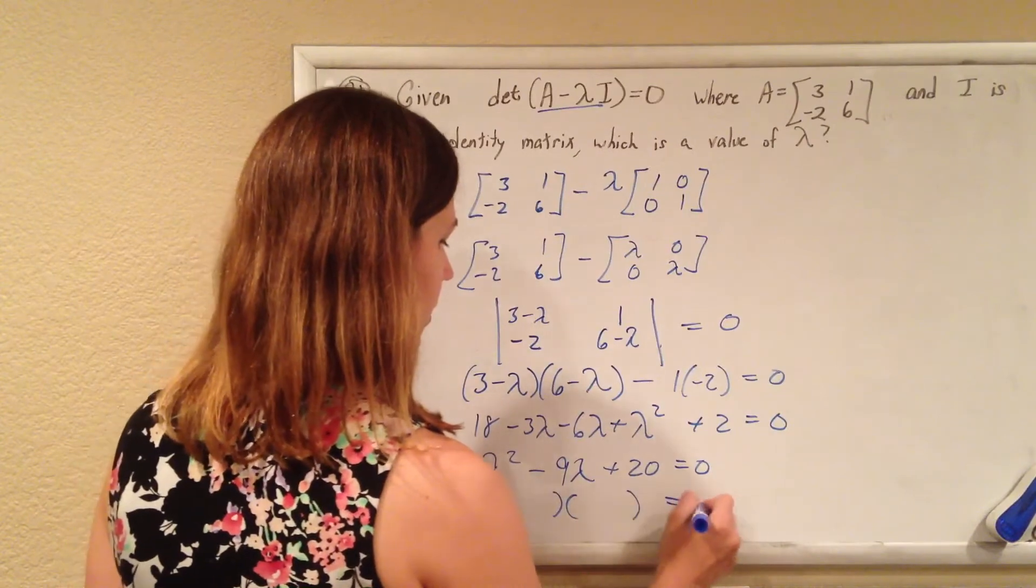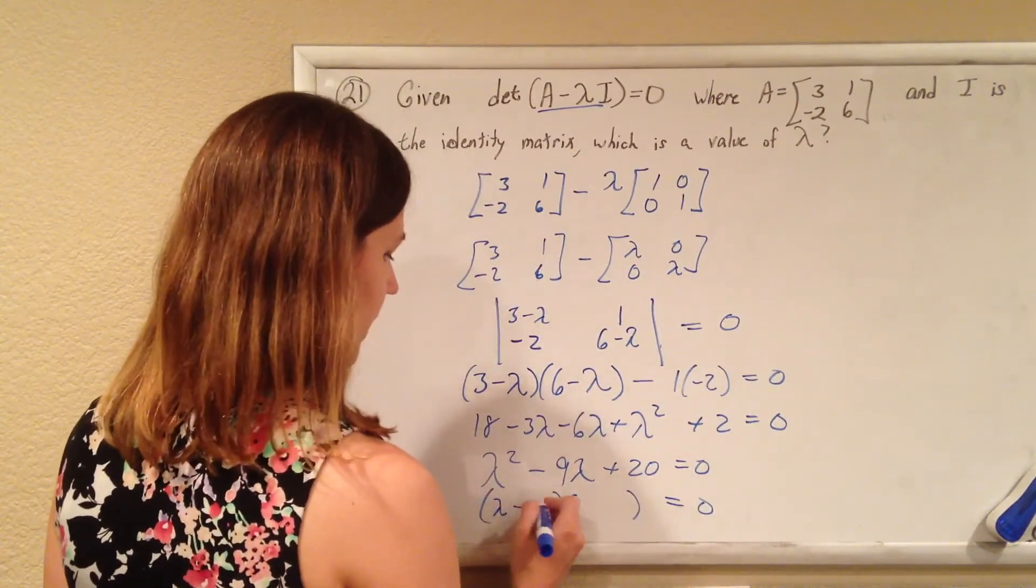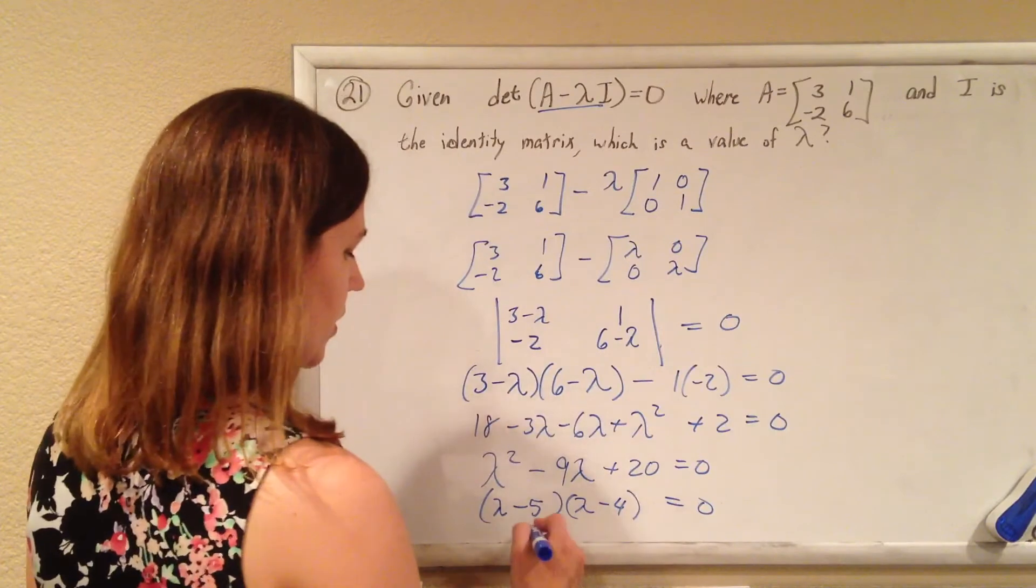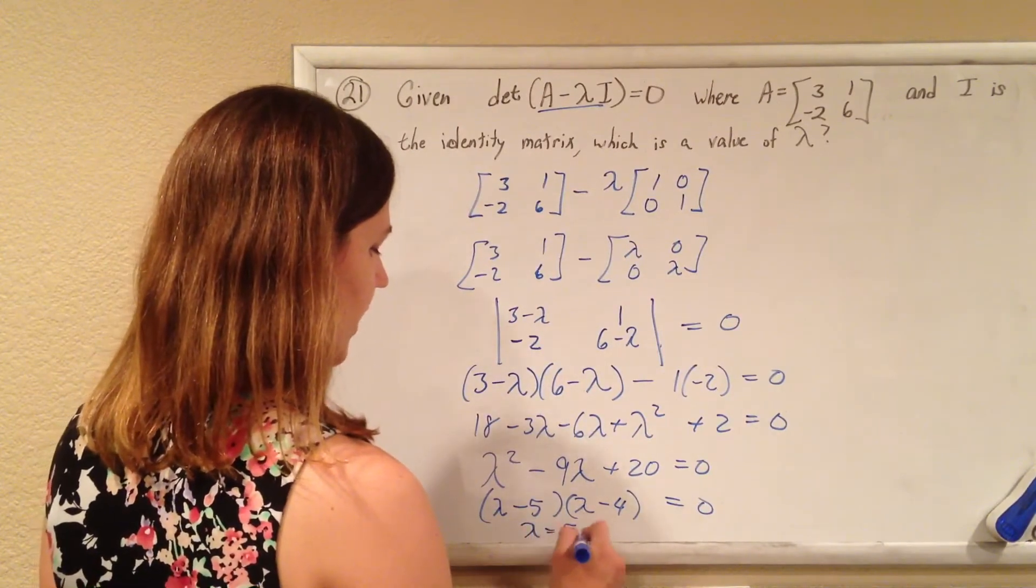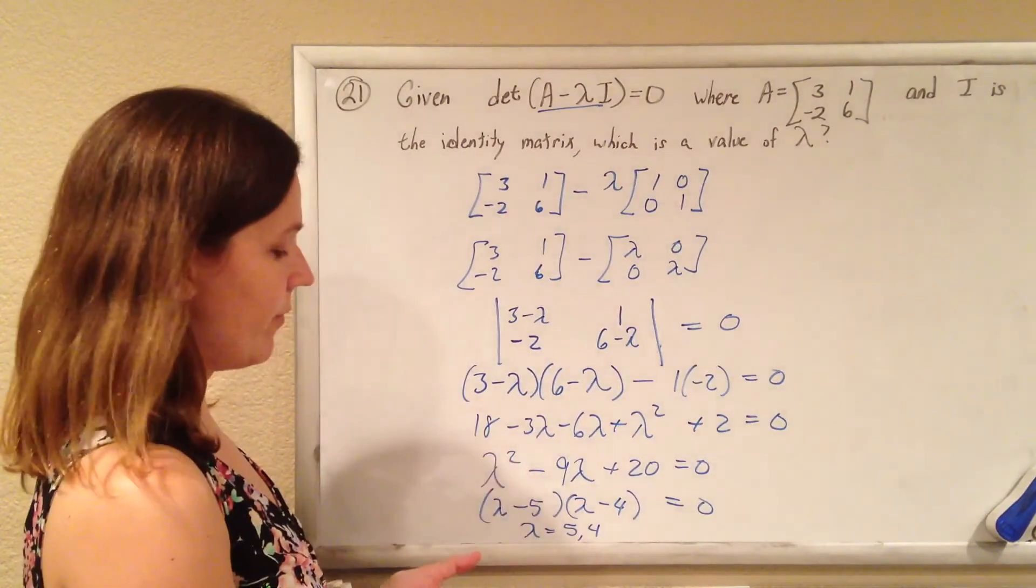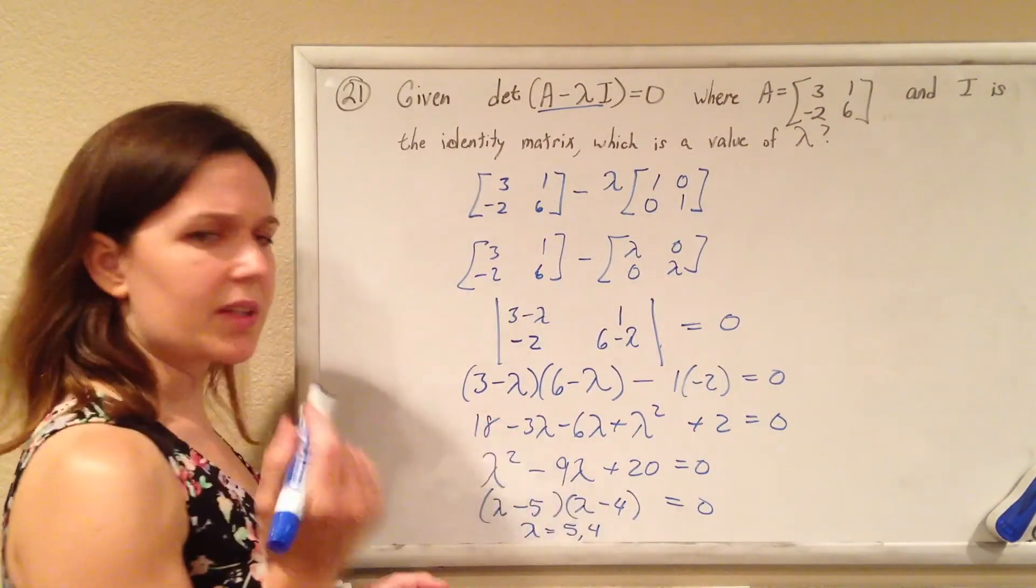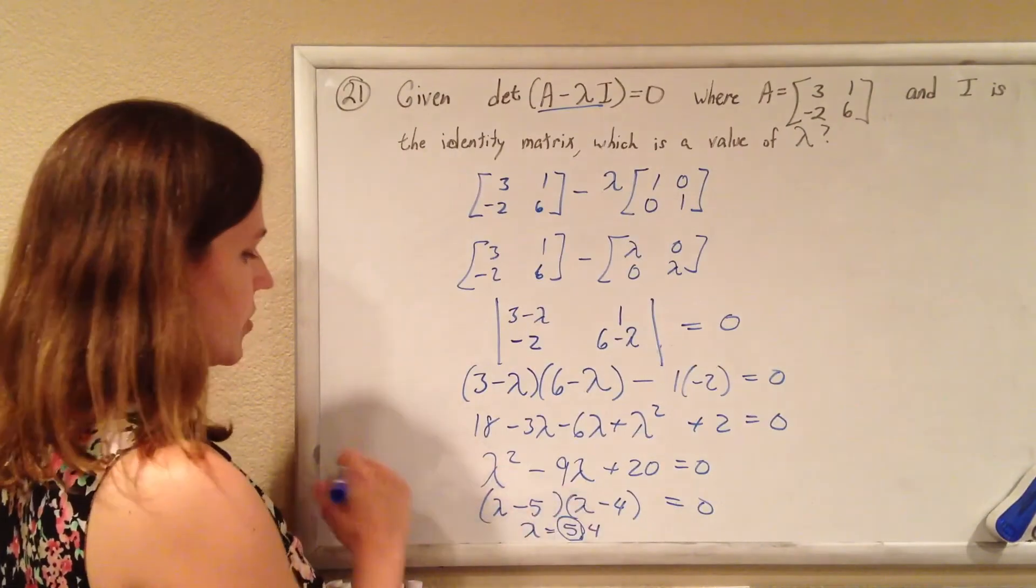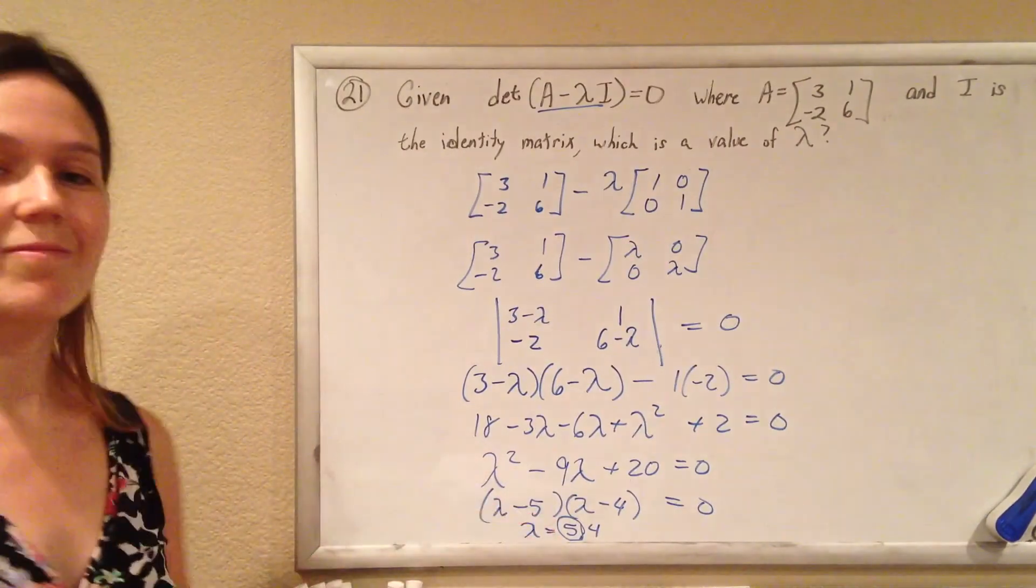We'll factor that. Lambda minus 5 times lambda minus 4 equals 0. So lambda could equal 5 or 4. So both of them are perfectly valid values for lambda, and the only one that's listed in the multiple choice there is that 5. So that's your answer. Goodbye.